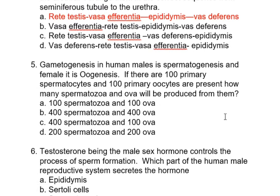Gametogenesis in human males is spermatogenesis, and in females it is oogenesis. If there are 100 primary spermatocytes and 100 primary oocytes, how many spermatozoa and ova will be produced? Remember: for the male side, multiply the mother cell count by four; for the female, the same number is retained. So 100 primary spermatocytes give 400 spermatozoa, and 100 primary oocytes give 100 ova.